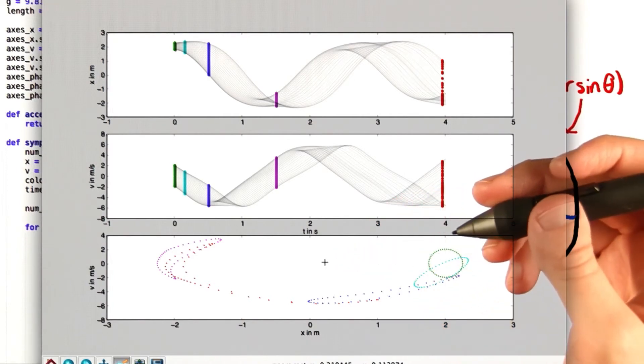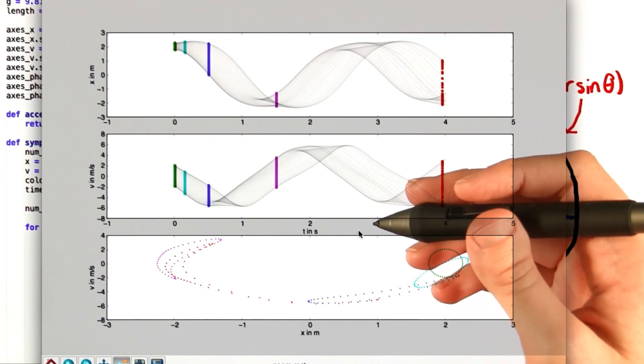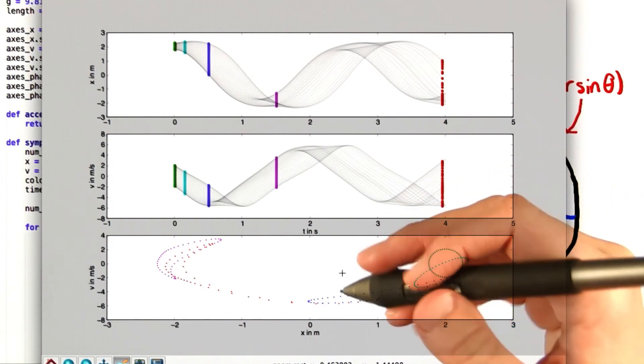The symplectic Euler method, however, conforms much better to the equations of motion of physics, and therefore reflects exact theoretical predictions more accurately. Great job with the first problem of unit 2.